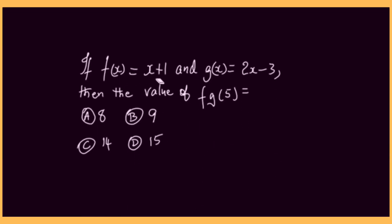If f of x equals x plus 1 and g of x equals 2x minus 3, then the value of f of g of 5 is one of these options.